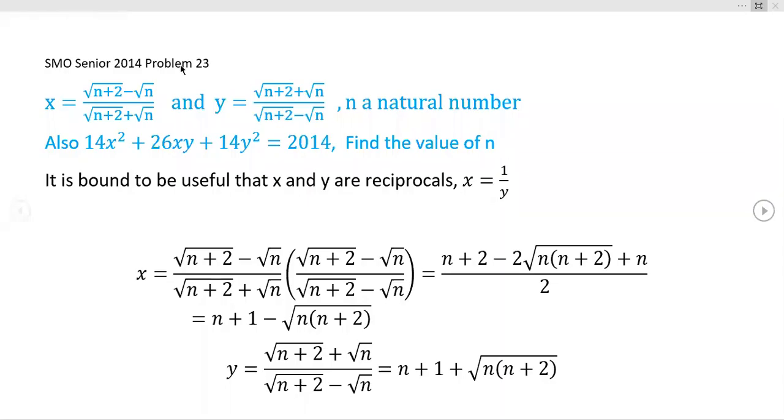This is the year 2014, problem 23. Now what we're given here looks like a horrible mess—I almost didn't even try it. It looks like there's too many unknowns. We're given x and y as functions of a natural number n, where n is a positive integer.